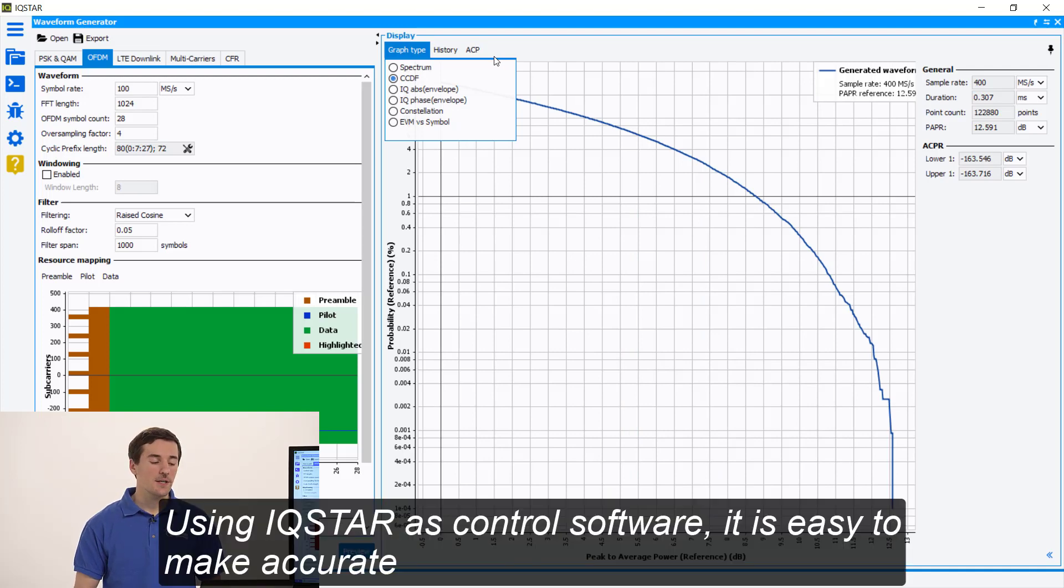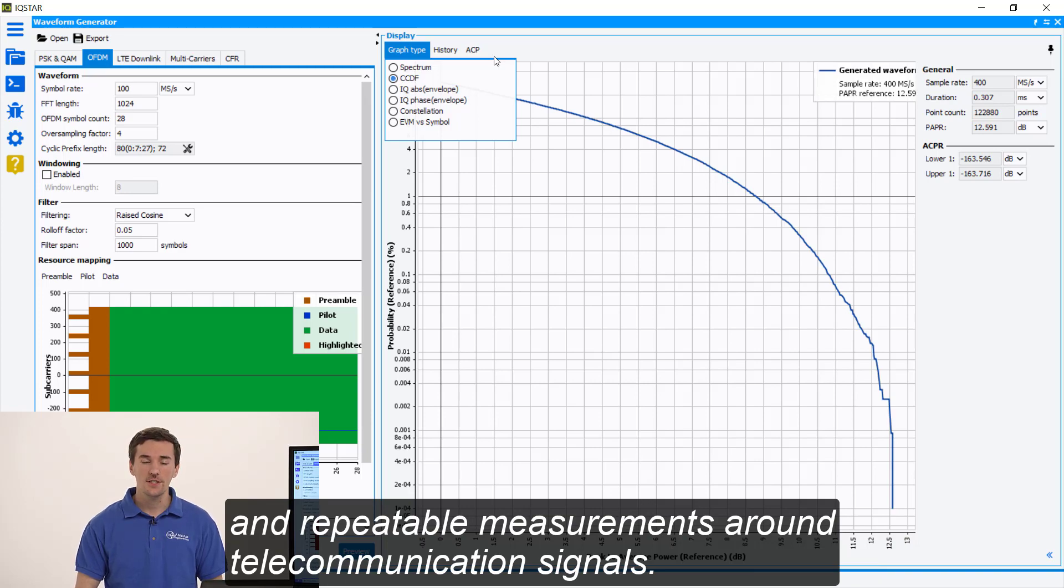Using IQSTAR as a control software, it is easy to make accurate and repeatable measurements around telecommunication signals.